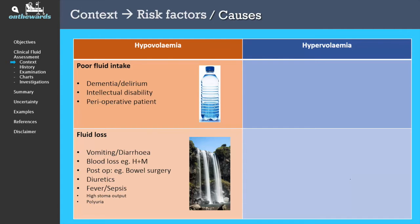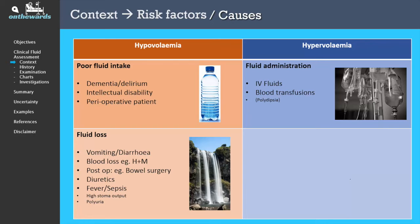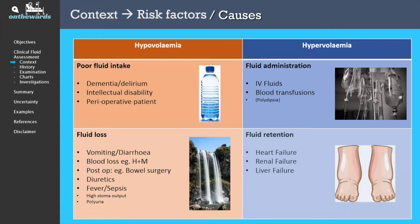When we look at hypervolemia, we have to first think about excessive fluid administration. IV fluids is a common source, and we should also remember the occult fluids that are usually given with things like antibiotics. Blood transfusions is a way of giving fluid, and there are some situations where polydipsia might be a problem. There are also situations where fluid retention can cause hypervolemia. Heart failure, kidney failure and liver failure are common examples.